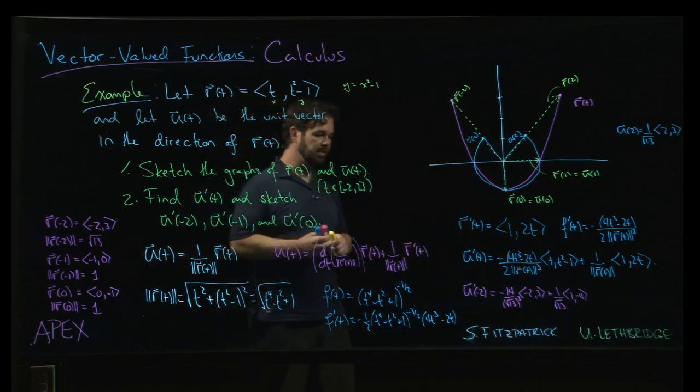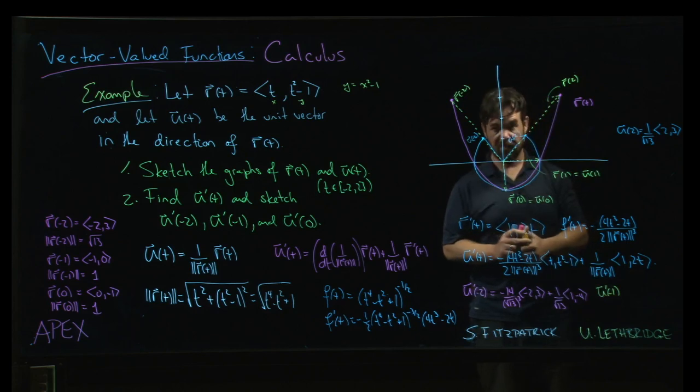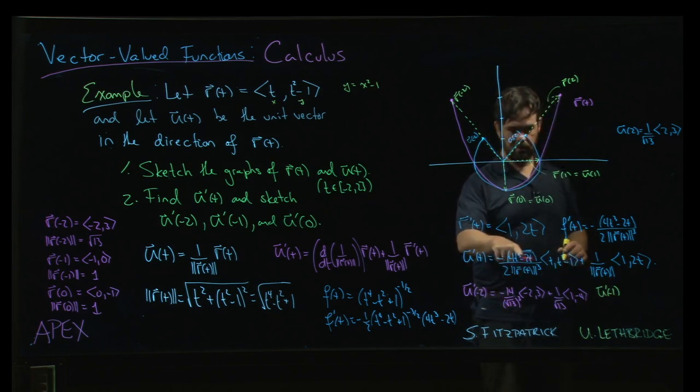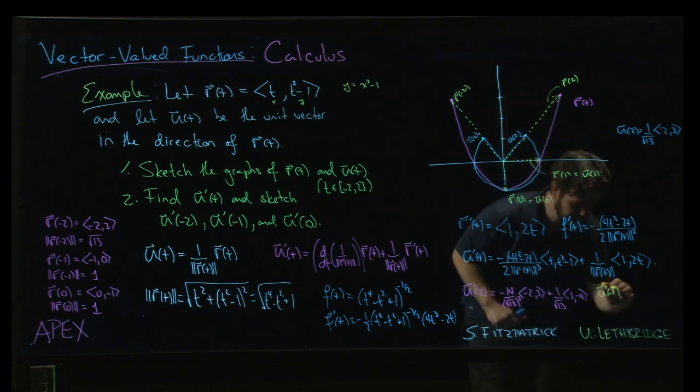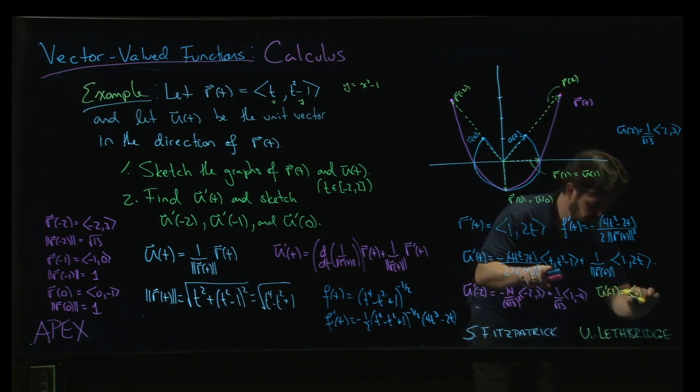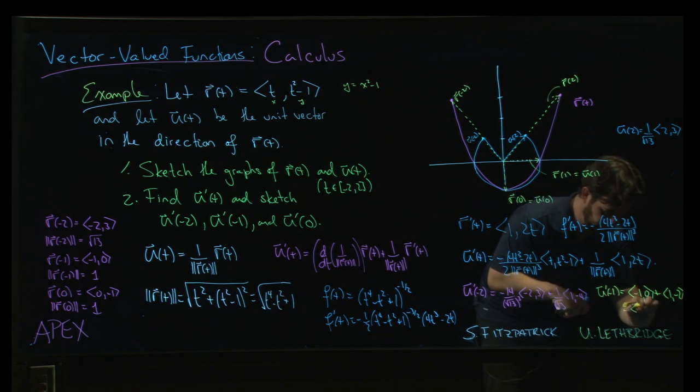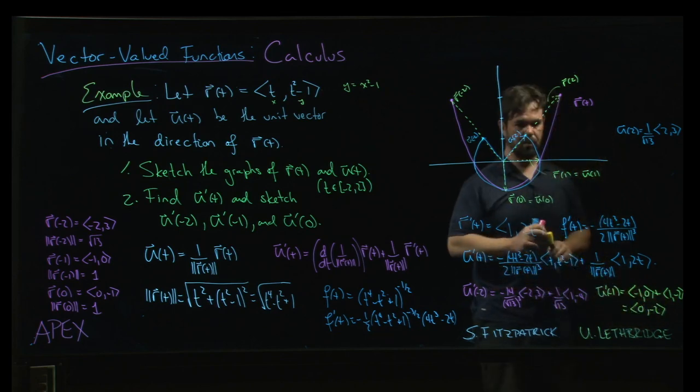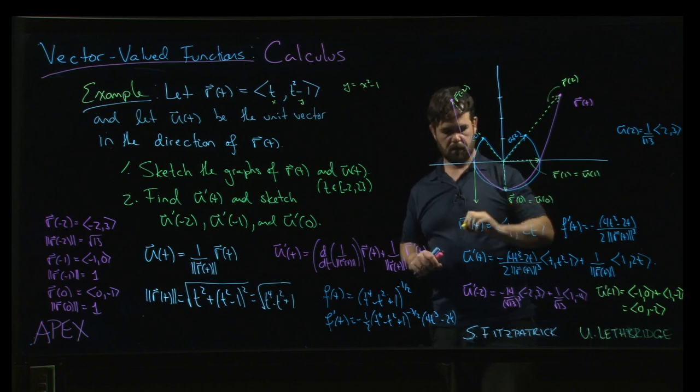At minus 1, the magnitude is 1, so that's a little bit better. Let's see if that works out nicer. u prime at minus 1: this is going to be minus 4 plus 2, so that's just minus 2. Minus 2 over minus minus 2 becomes plus over 2. That's just 1. So now the coefficient is just 1. I like that better. So this vector is going to be <-1, 0> plus <1, -2>. So we get <0, -2> for u prime of minus 1. And so that looks something like that.